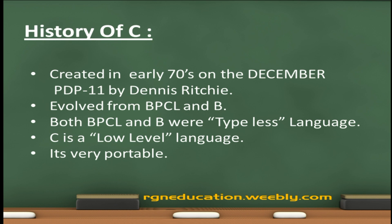Let's take a look at the short history of C programming language. C was originally created in the early 70s, along about 1972, by Dennis Ritchie on a digital equipment called PDP-11 system.